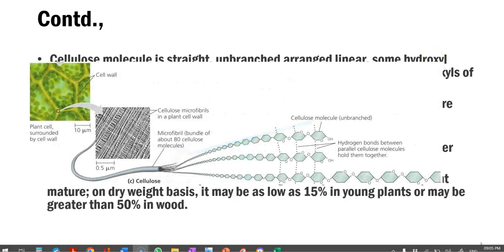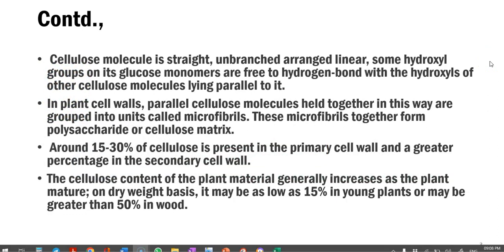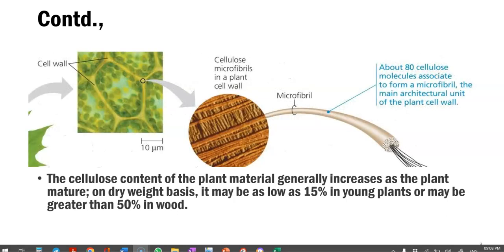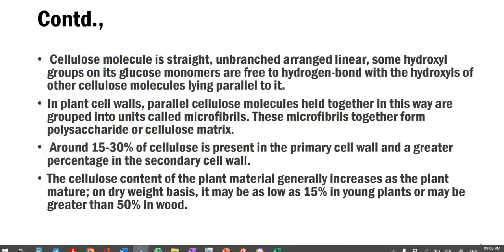Cellulose is a straight unbranched molecule, linear in its arrangement. Some hydroxyl groups on the glucose monomers are free to form hydrogen bonds with the hydroxyls of other cellulose molecules lying parallel to it. In plant cell walls, parallel cellulose molecules are held together in this way and grouped into units called microfibrils. These microfibrils together form the polysaccharide or cellulose matrix. Around 15 to 30% of cellulose is present in the primary cell wall, with a greater percentage in the secondary cell wall.